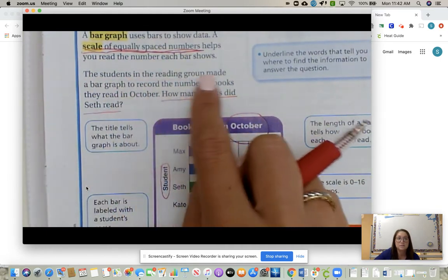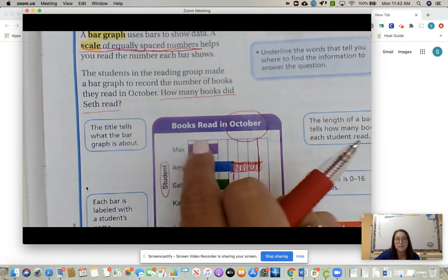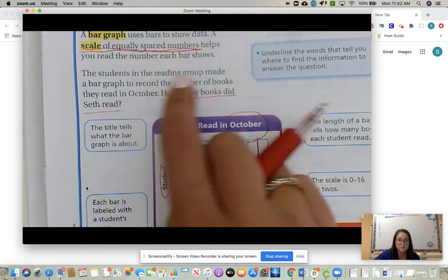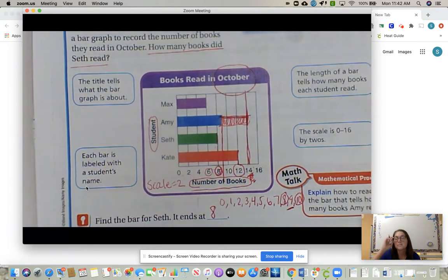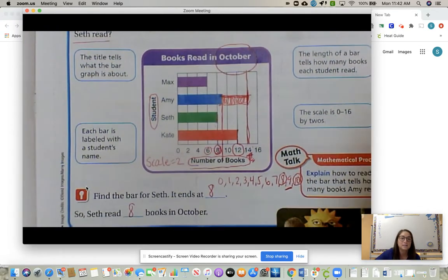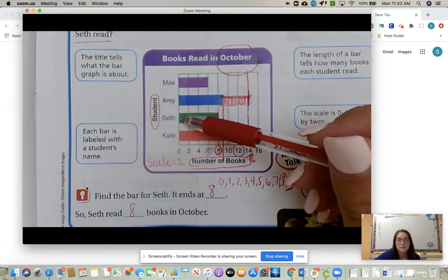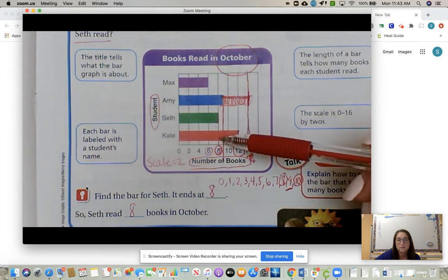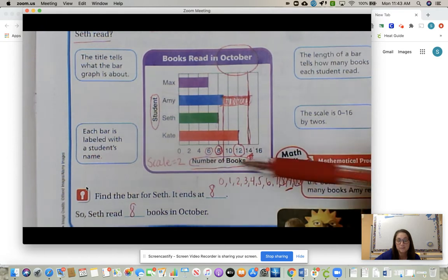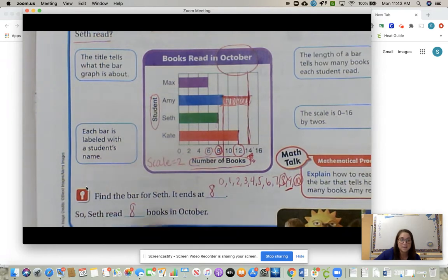Now our question: the students in the reading group made a bar graph to record the number of books they read in October. That's our title, books read in October based on this reading group. How many books did Seth read? We practiced being able to identify the books that Max, Amy, Seth, and Kate read. If we go to Seth, you slide on over until you are at the end of that bar graph. You can follow the line to the bottom where we have number of books. He read eight books. So Seth read eight books in October.